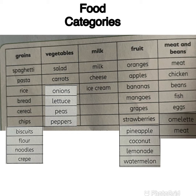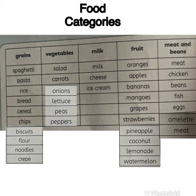Contoh-contoh yang masuk dalam kategori grains ialah: spaghetti, pasta, rice, bread, cereal, chips, biscuits, flour, noodles. Tolong ingat ejaan kerana nanti kita akan buat spelling test. Jom kita sebut semula: grains, spaghetti, pasta, rice, bread, cereal, chips, biscuits, flour, noodles.